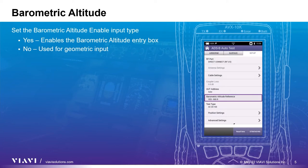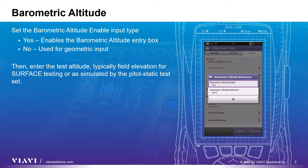Once you have gone through the common setup parameters, enter the barometric altitude reference. First, enable the barometric altitude setting by selecting yes. Select no if using geometric input versus barometric input. Then enter the test altitude, typically field elevation for surface testing or as simulated by the pitot-static test set.